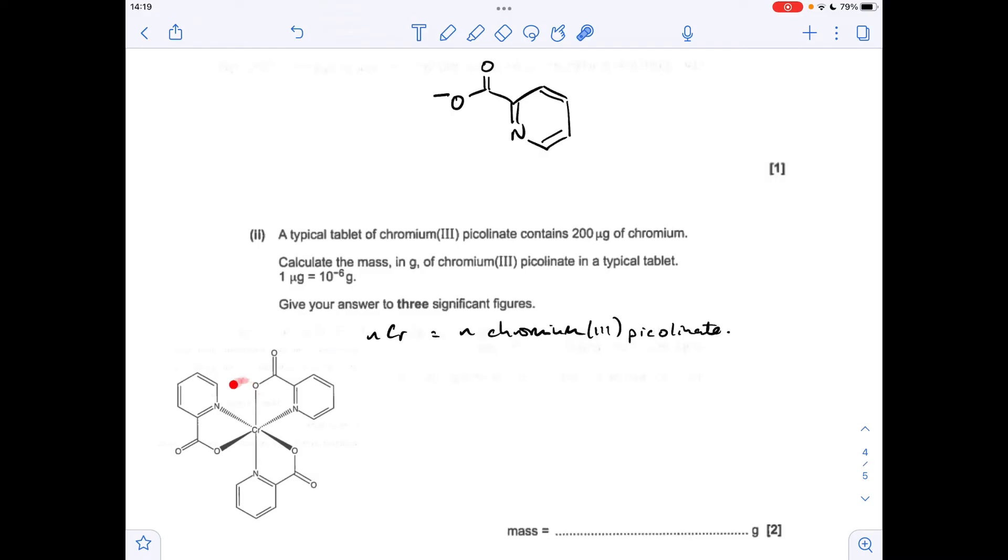Moving on to the calculation now. We're told a typical tablet of this stuff here contains 200 micrograms of chromium. You can see we've got one chromium in there. So the moles of chromium is equal to the moles of the whole thing. So the moles of chromium, and obviously the moles of the tablet: 200 × 10⁻⁶, it's 200 micrograms and there's the conversion there. So 200 × 10⁻⁶ over 52 is that many moles.